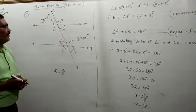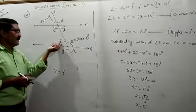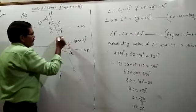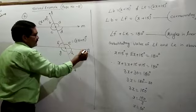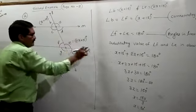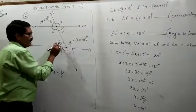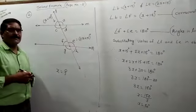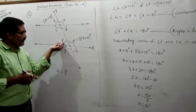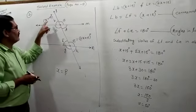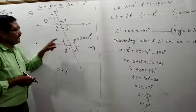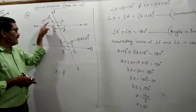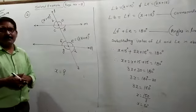To find out the value of x, this angle and this angle are the linear pair of angles, because these lines intersect at this vertex. Angle F and angle E are the linear pair of angles. So first you have to find out angle F. To find angle F, you have to concentrate on angle B and angle F. When the transversal intersects the two given lines, angle B and angle F are corresponding angles.